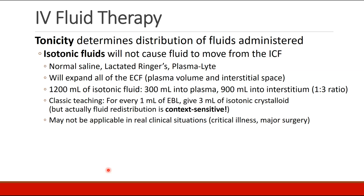That's why the classic teaching was: for every milliliter of estimated blood loss, give 3 milliliters of isotonic crystalloid, with the understanding that some of that fluid is going to leave the intravascular space. But real fluid distribution is context sensitive, and this ratio is probably not correct. Certainly in real clinical situations like critical illness and major surgery, we hesitate to give this large volume of crystalloid empirically just based on a calculation from blood loss.